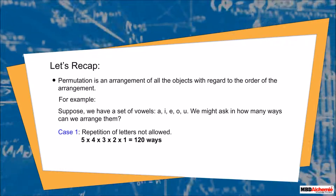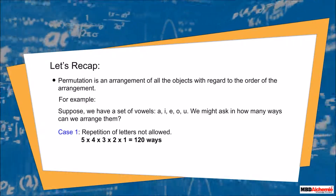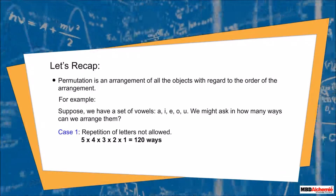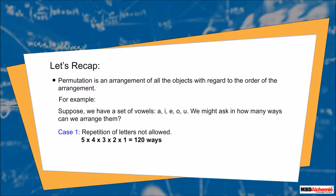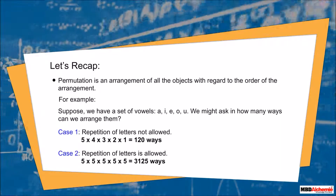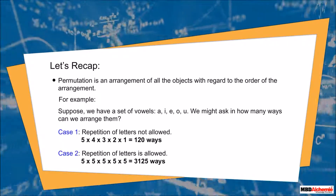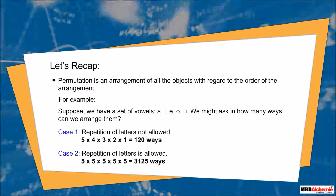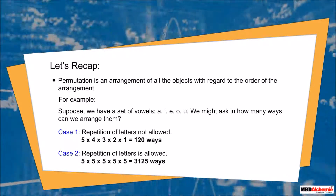In case 1, repetition of letters is not allowed. The total number of ways is 5 into 4 into 3 into 2 into 1, which is equal to 120 ways. In case 2, repetition of letters is allowed. The total number of ways is 5 into 5 into 5 into 5 into 5, which is equal to 3125 ways.